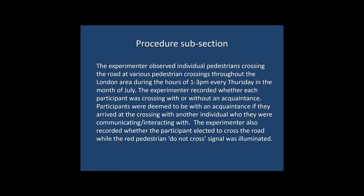Here's the procedure subsection of our example lab report. You might want to pause the video at this point to give yourself the chance to read the text in full. Hopefully, having read this passage of text, you can see what the author is doing to convey the process of observation to the reader — i.e. how the participants were observed. Whatever kind of design you're writing a procedure subsection for, the overarching aim is always the same: to provide the reader with enough information that if they wanted to replicate your procedure, they would be able to from having read it.